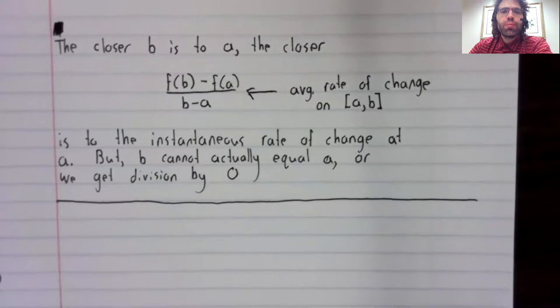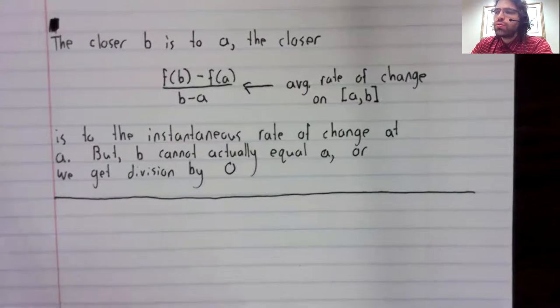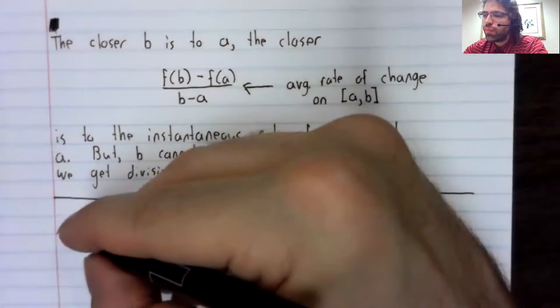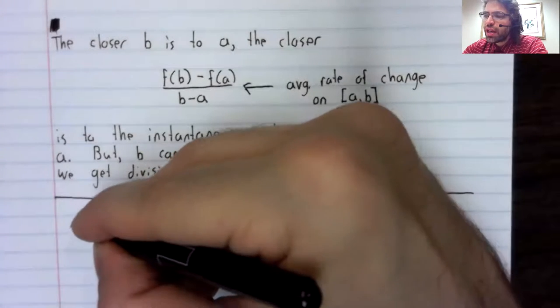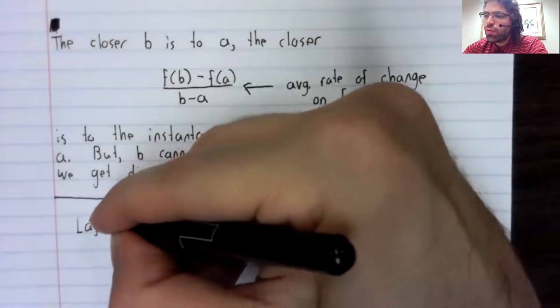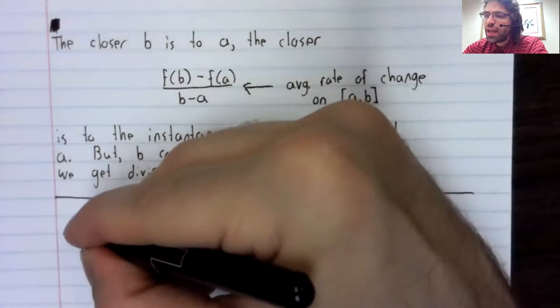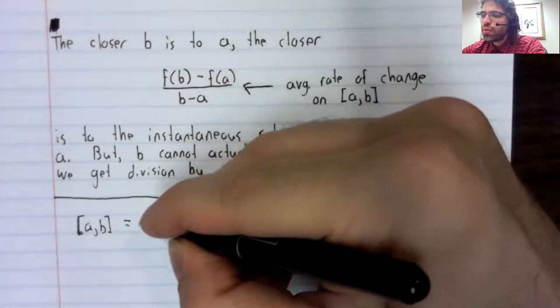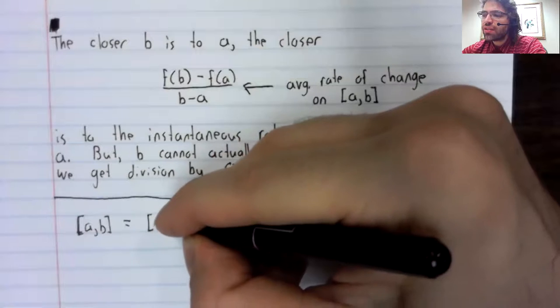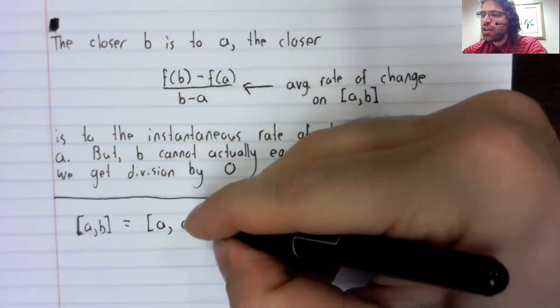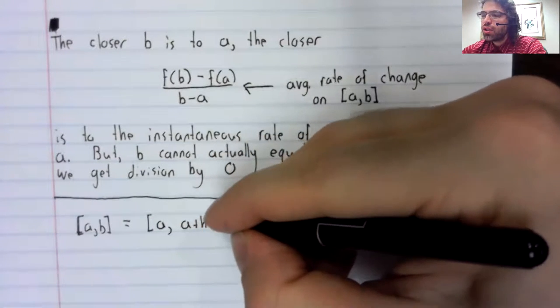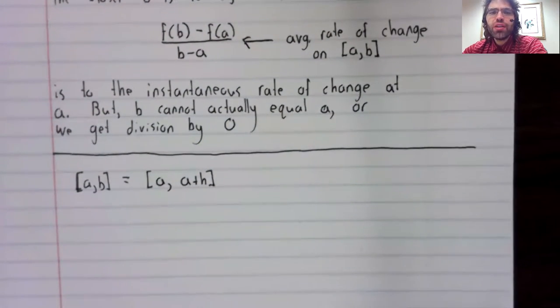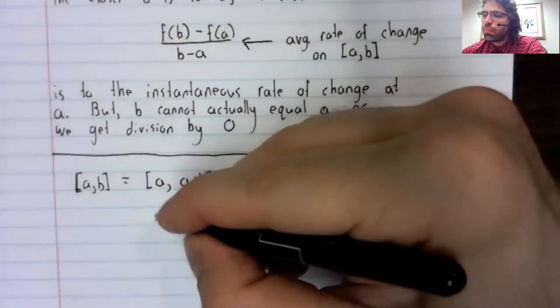Before we end this video, let's rewrite this fraction a little. If we have an interval from a to b, we could think of that as the interval from a to a plus h, where h is some number.